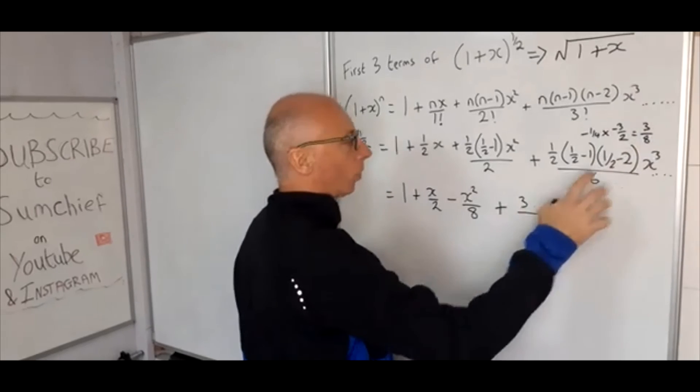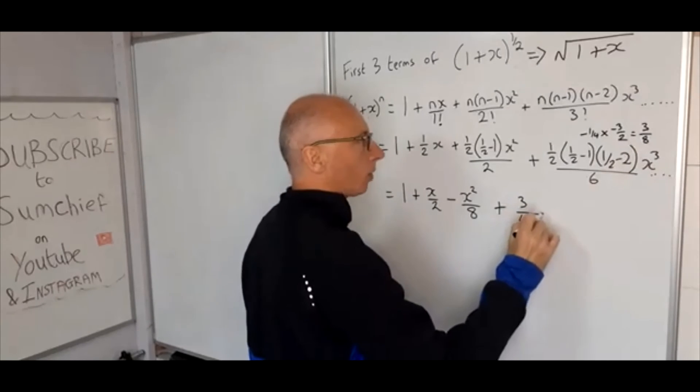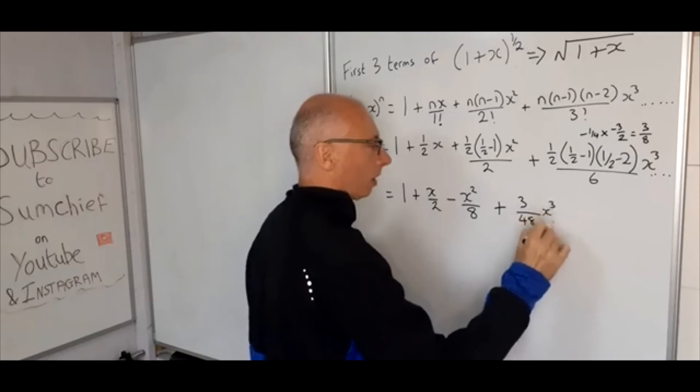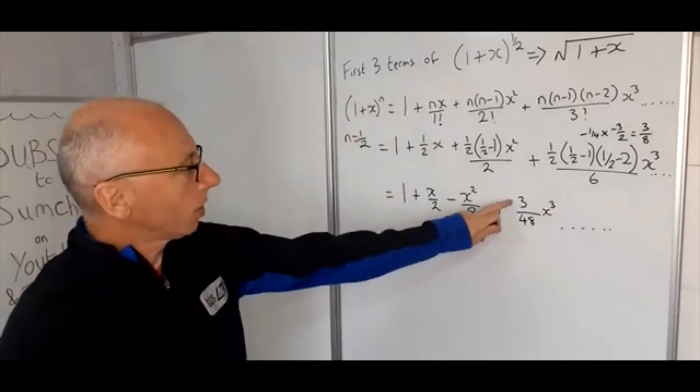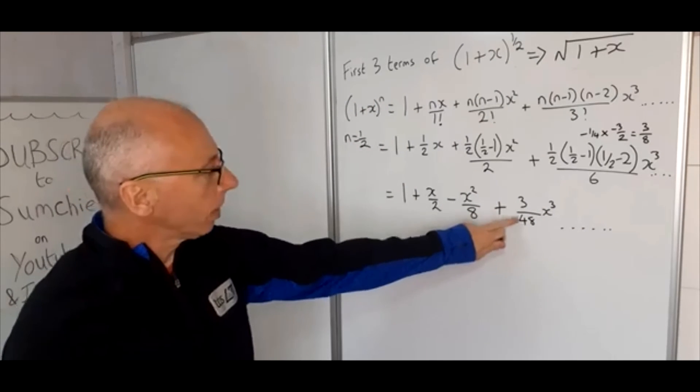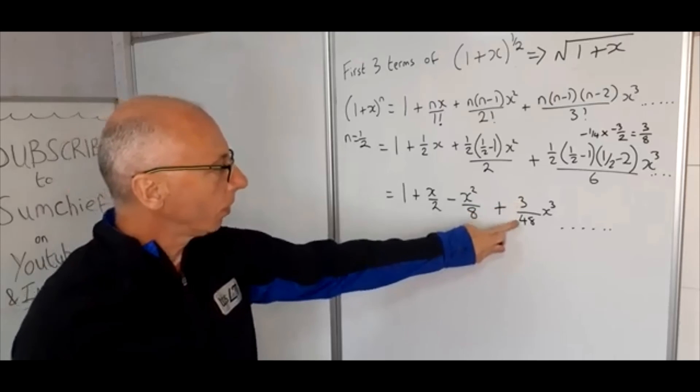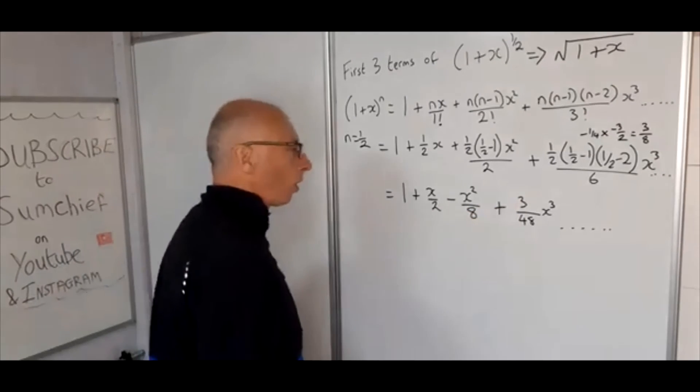3 over 48 x³ and so on. And then we can see here we can still cancel this down even further. So the 3 over 48 - the 3 and 48 we can make that as 1 and 16.